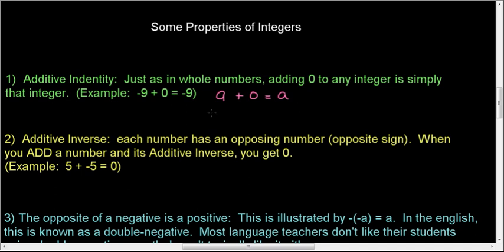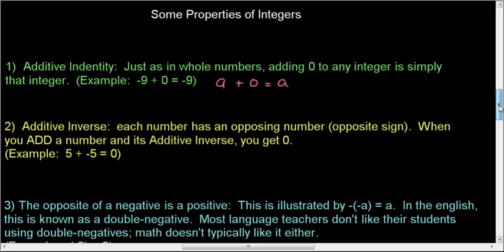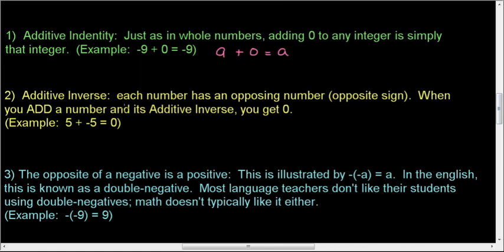The additive inverse is new to the integers. The additive inverse is the opposite of a number. So suppose you have a number like 5. Its additive inverse is negative 5. The reason it's called additive inverse is because when you add them, you get the identity 0.